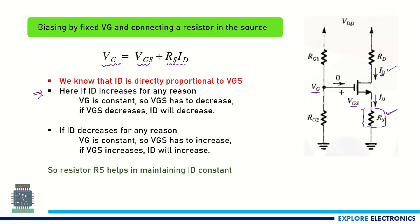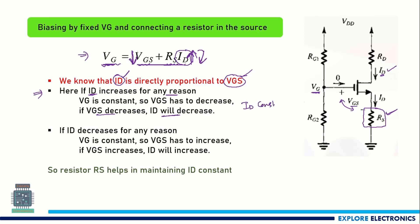First, let us take the case where ID increases for any reason. In the expression VGS + RS·ID = VG, VG is constant. If ID increases, VGS must decrease to keep the right-hand side equal to VG. We know that in the saturation region, ID depends on VGS — if VGS decreases, current decreases. So because ID increased, VGS decreases, which brings the current back to its normal value. This way, RS provides negative feedback to keep ID constant even if ID tries to increase.